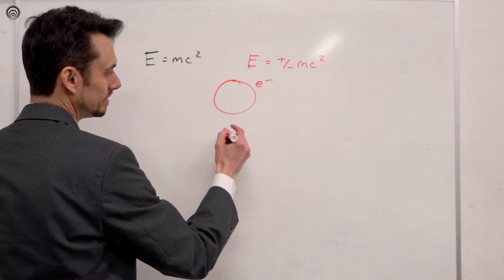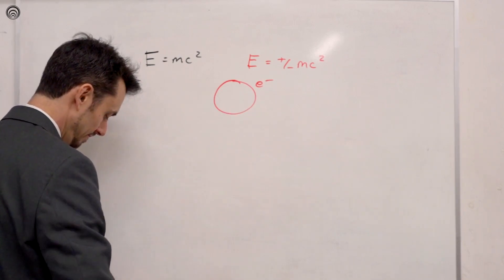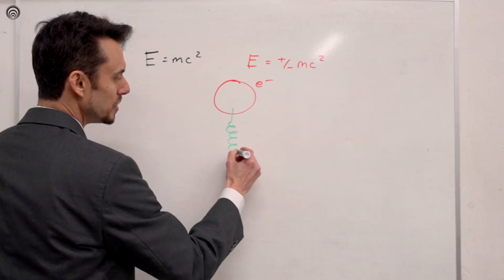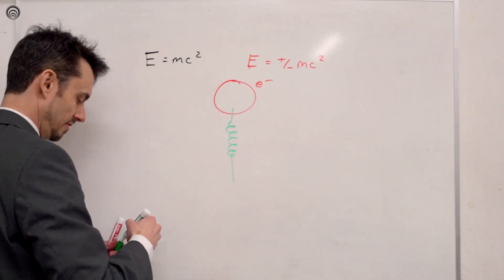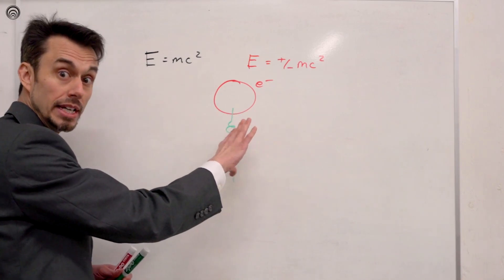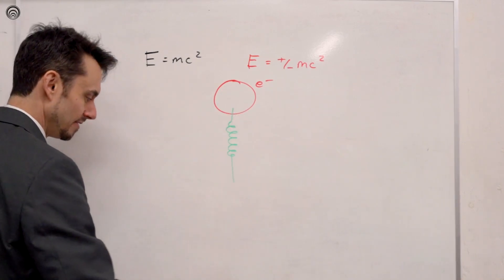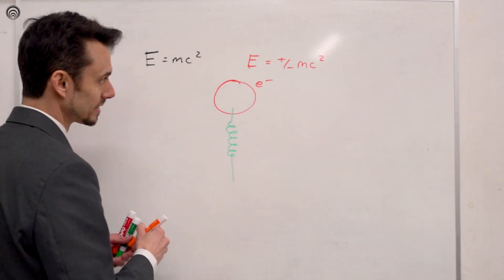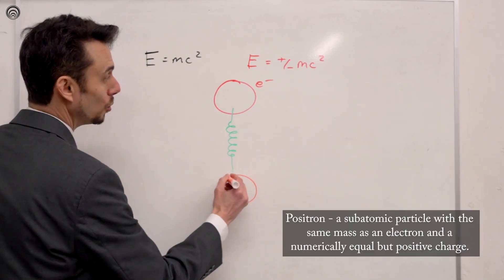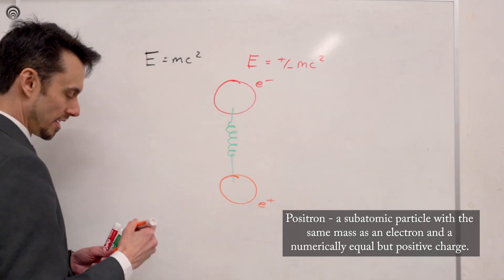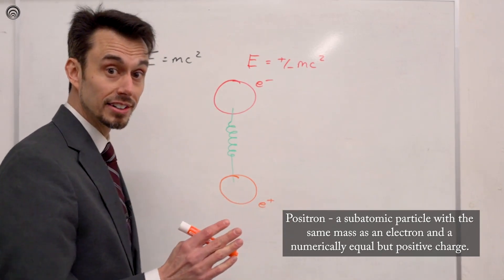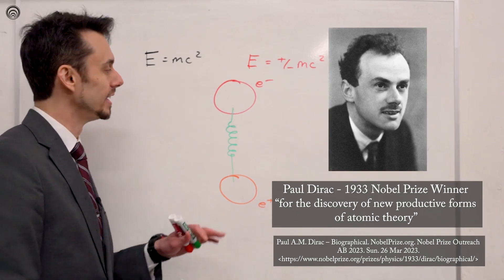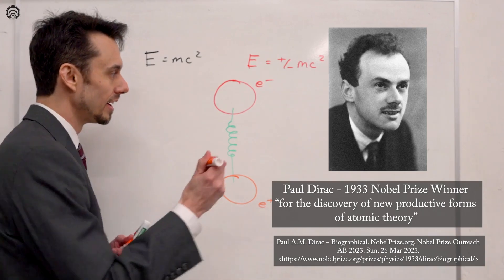You have the electron. And then you have some kind of spring coefficient, which is kind of rubbery, something that's joined to antimatter. What is antimatter? It's called a positron. And Paul Dirac got a Nobel Prize for it in 1943, roughly around there. He got a Nobel Prize for calculating that.